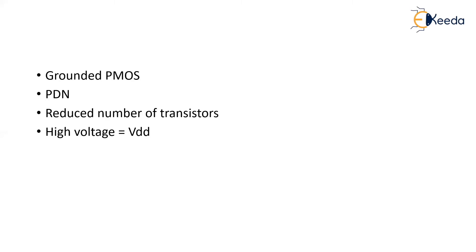And when compared with your static logic style and your dynamic logic style, we have only a reduced number of transistors. Why? Because we have only a pull-down network and we don't have a pull-up network. In the place of pull-up network, we have a grounded PMOS. So only a single transistor is there on the top position and a PDN will be there on the bottom.